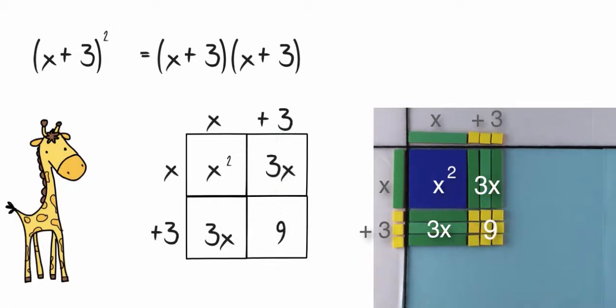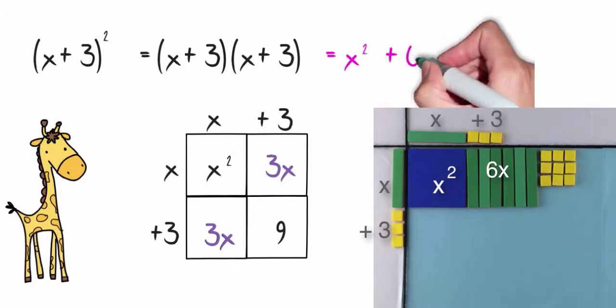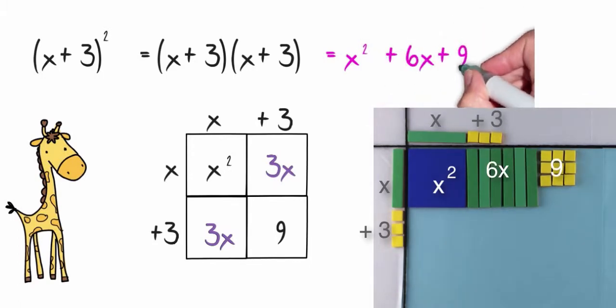Again, to find my final answer, I need to add up the terms in the squares. While I'm doing that, I need to make sure I combine my like terms, which are the 3x and the 3x. This would give me a final answer of x squared plus 6x plus 9.